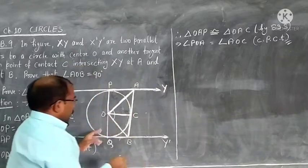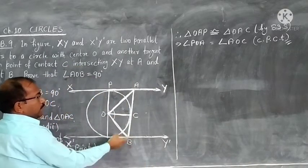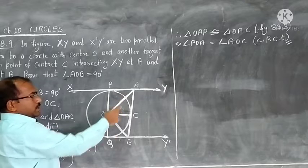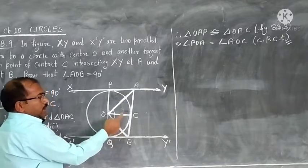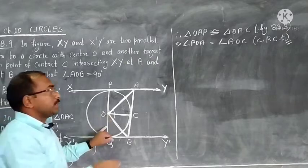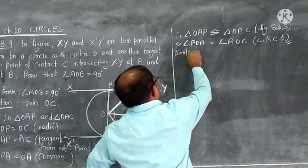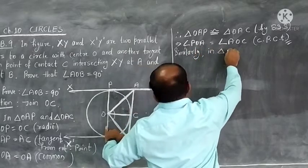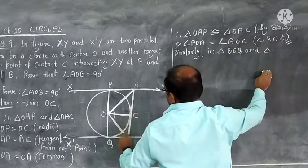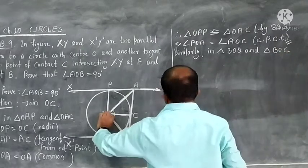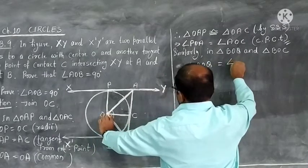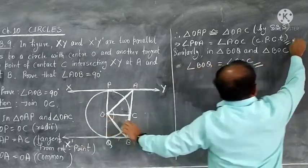Now we will work in the other two triangles: triangle BOQ and triangle BOC. The same conditions apply here as well. So in these two triangles, angle BOC equals angle BOQ. This gives us equation 2: angle BOQ equals angle BOC.